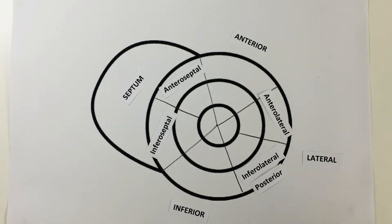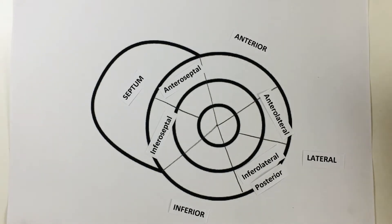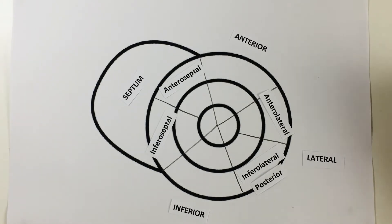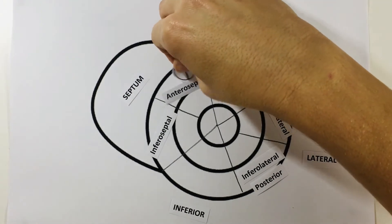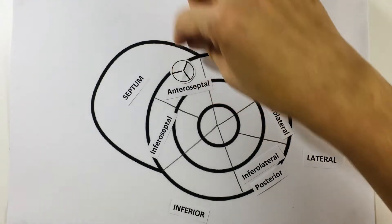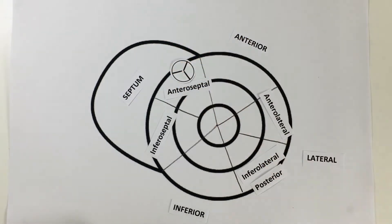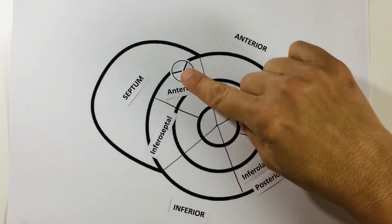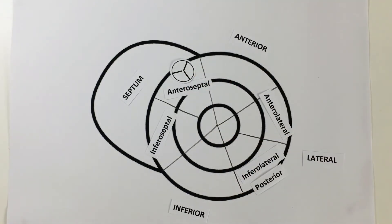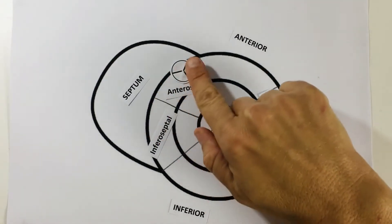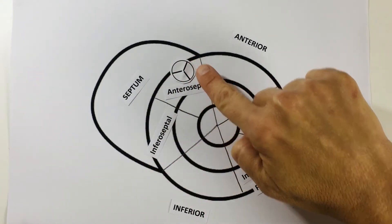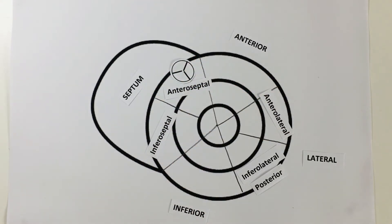Before we can label our echo images, there are a couple of other things to remember. Firstly, the location of the aortic valve — I'm going to place the aortic valve here on the anteroseptal wall. So if you're looking at the aortic valve on your echo picture, you're looking at the septum — specifically the anteroseptal wall.